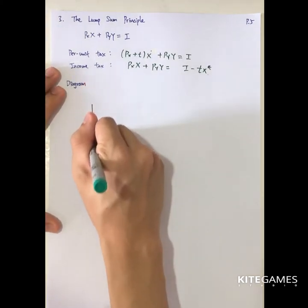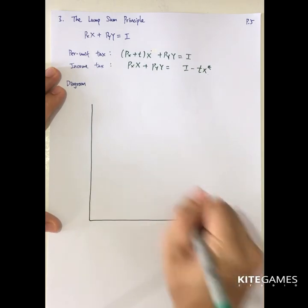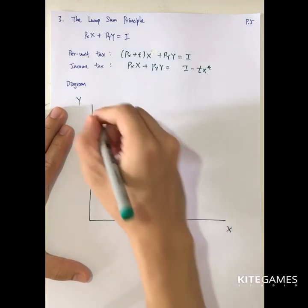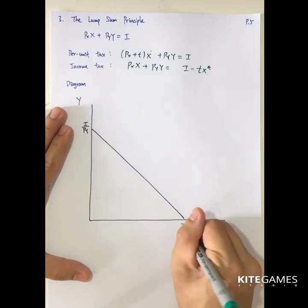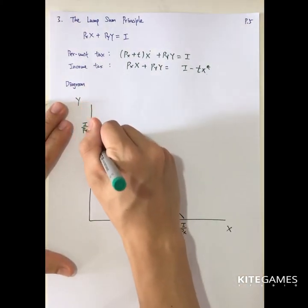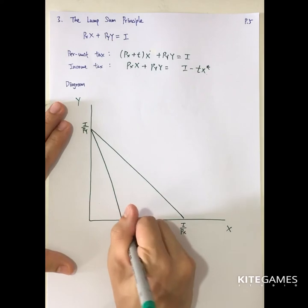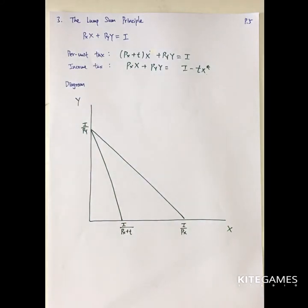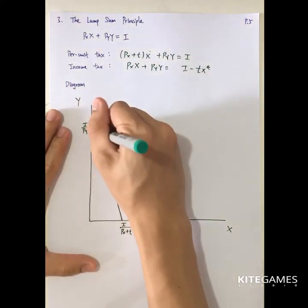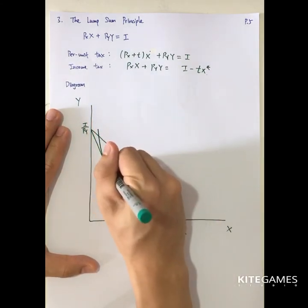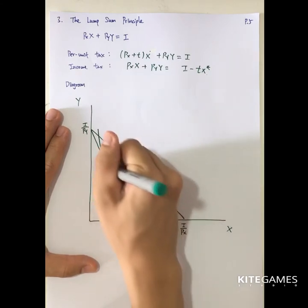Let's use a diagram to show this. This is the original budget constraint. Now if there is a per unit tax charged on good x, the budget line will rotate inwards. Then you can find the optimal x and y by the intersection of the indifference curve and the budget line.